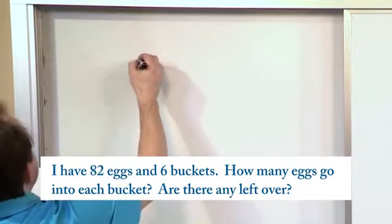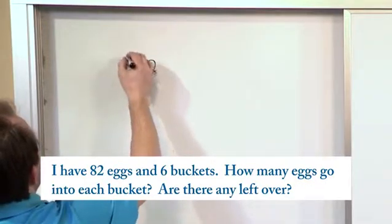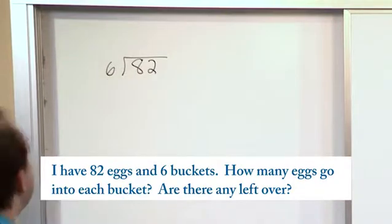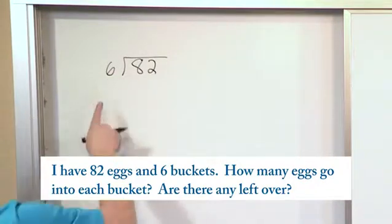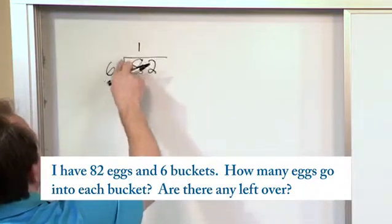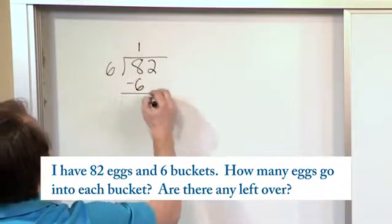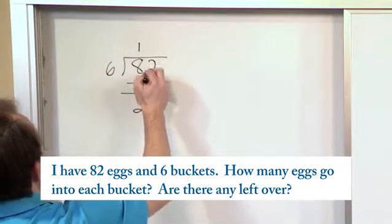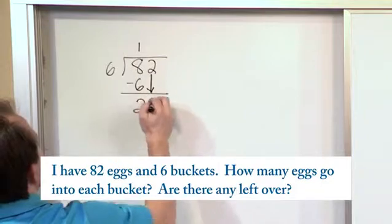So really what we have is 82 eggs and we're dividing by 6. We want to see how many times will 6 go into that number. How many times will 6 go into 8? That will only go one time. Then we multiply, 6 times 1 is 6 and subtract. 8 minus 6 is 2. Once we've done the subtraction, we reach up and grab the next digit which is a 2.